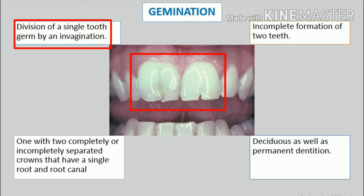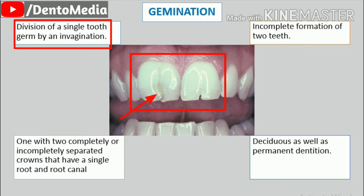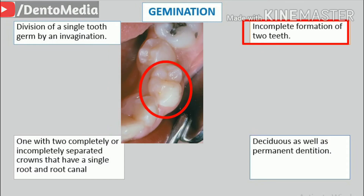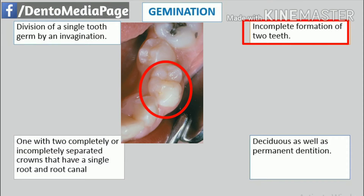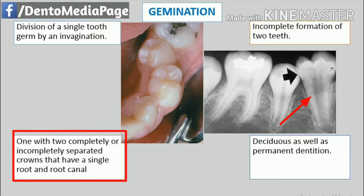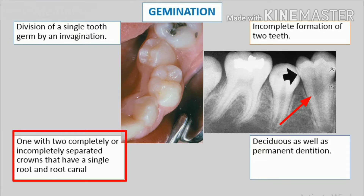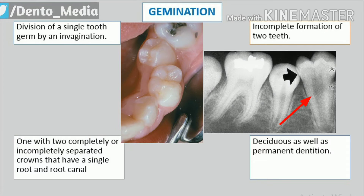Gemination. Geminated teeth are anomalies which arise from an attempt at division of a single tooth germ by an invagination, with resultant incomplete formation of two teeth. The structure is usually one with two completely or incompletely separated crowns that have a single root and root canal.